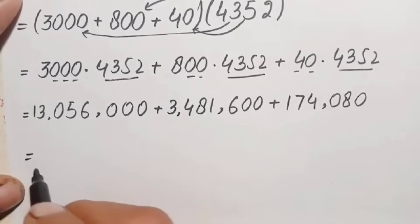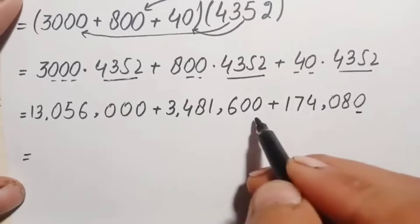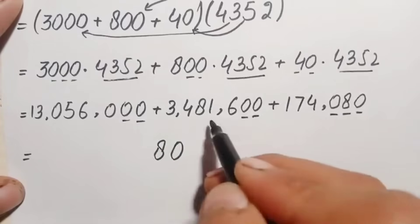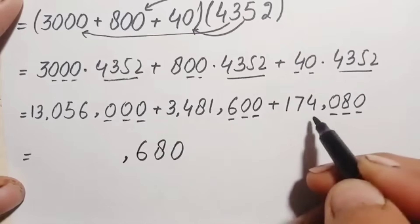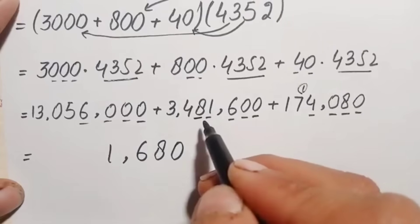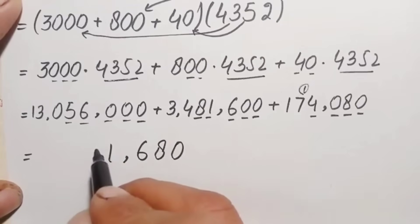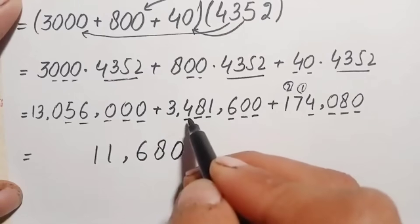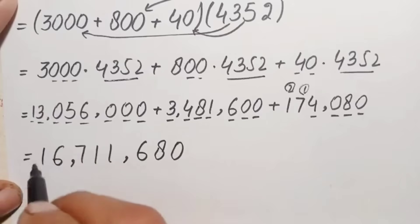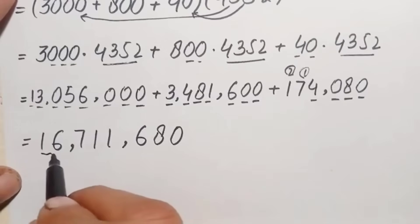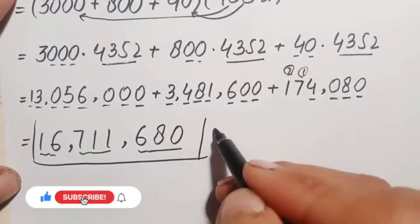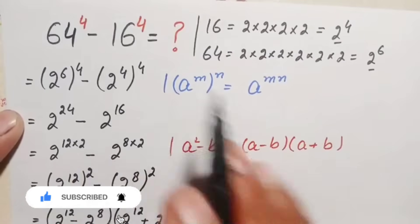Finally, we add all three results: 13,056,000 + 3,481,600 + 174,080. Adding column by column from ones: 0+0+0=0, 0+0+8=8, 0+6+0=6 (wait, then 6+0+6 with carries resolved), continuing through all digits — the final sum is 16,711,680. This is the answer and value of this beautiful exponential math problem.